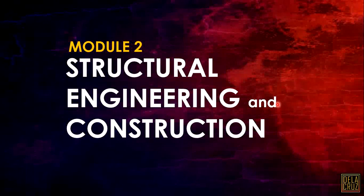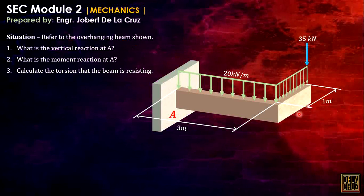Good day everyone. This will be our Module 2 for Structural Engineering and Construction. Let's begin with this basic problem. Here we can see an overhanging beam, or a cantilever beam, fixed at A with an overhanging portion in that direction. It is loaded with a uniformly distributed load and also a concentrated load at the end.